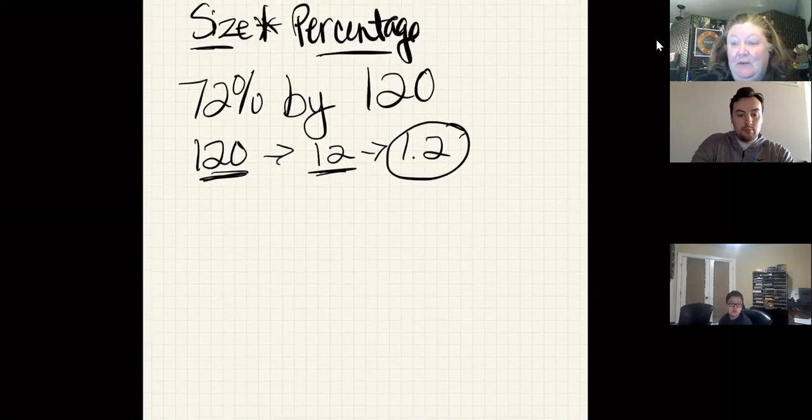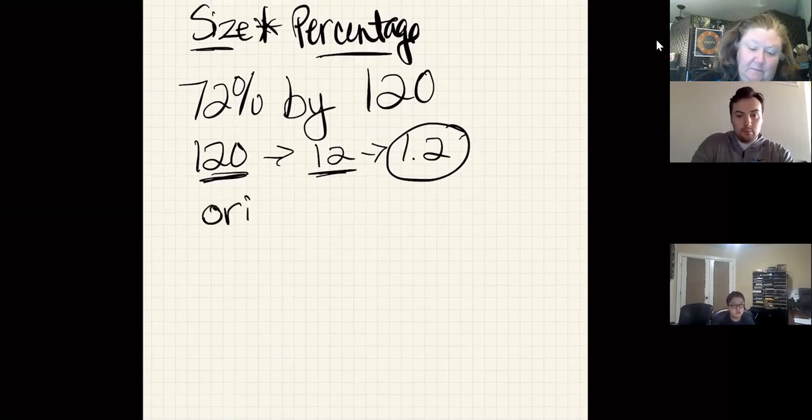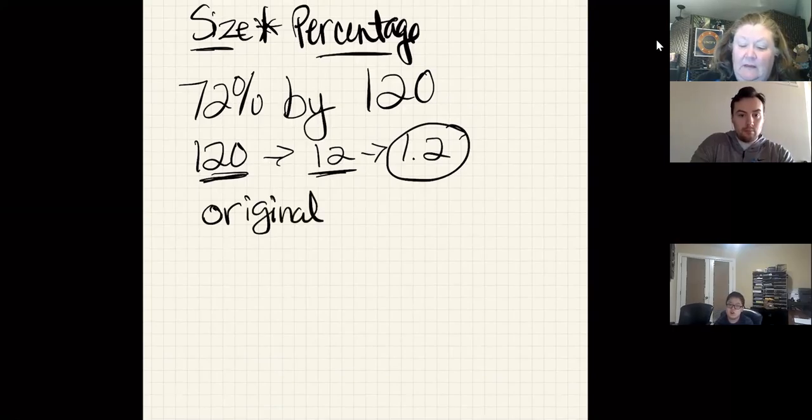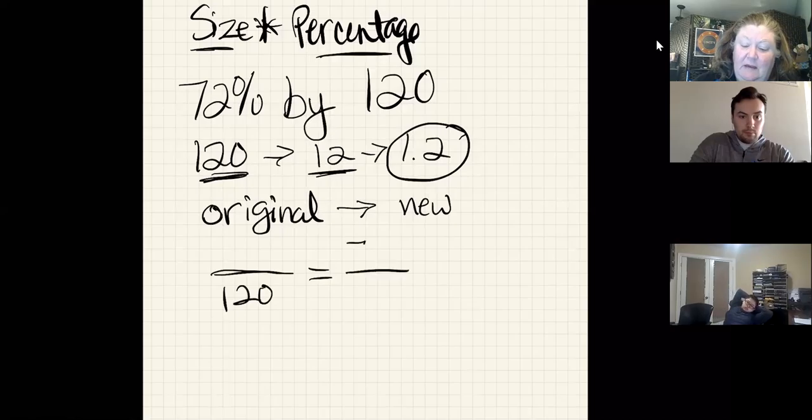I like to cross multiply. I've told you guys this last week as well. So if I have my original, and then I'm going to have a smaller new one because it's going to be 72% shorter, I can take the original which was 120 and make it equal to a fraction of the percent.